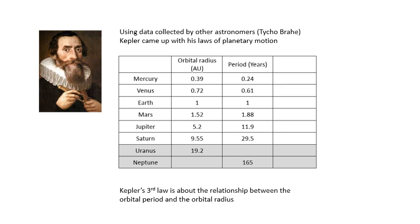Looking at the table, we have the planets known up to Saturn. The orbital radius is given in astronomical units (AU), where Earth is 1 AU from the Sun, so all other values are relative to that. The period is in Earth years, so Earth is 1,1 and all other planet data is relative to that.